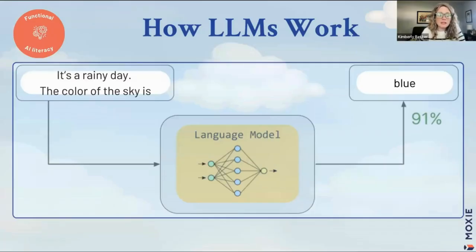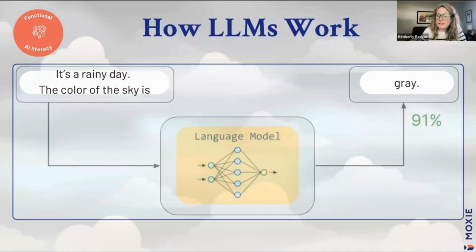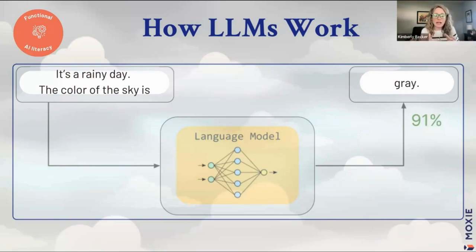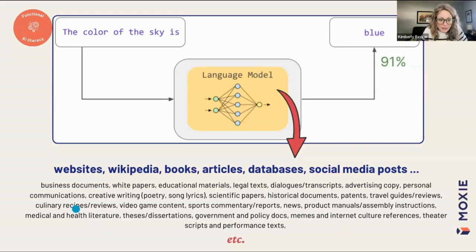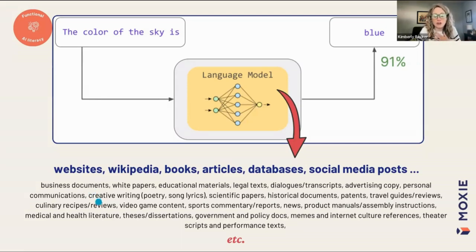LLMs use the context of whatever's in the model to determine the next word. For example: 'It's a sunny day, the color of the sky is blue' versus 'It's a rainy day, the color of the sky is gray.' Just like we can look around and notice context, the model looks at context within the language model's vocabulary to determine what the next word will be. The training data includes websites, Wikipedia, books, articles, databases, social media posts, and more — petabytes of data, so big we can't comprehend it.